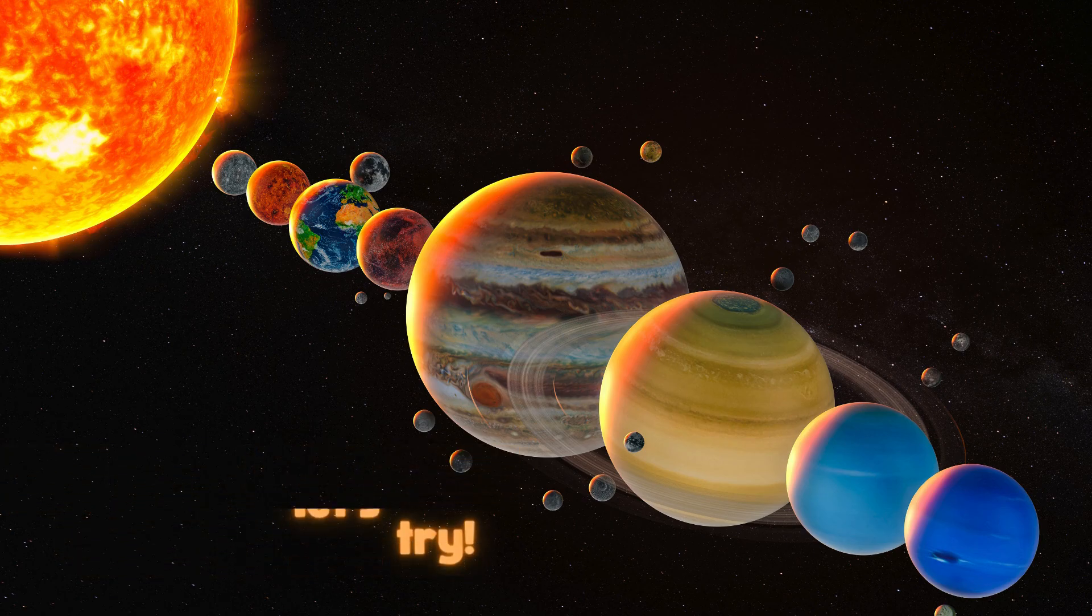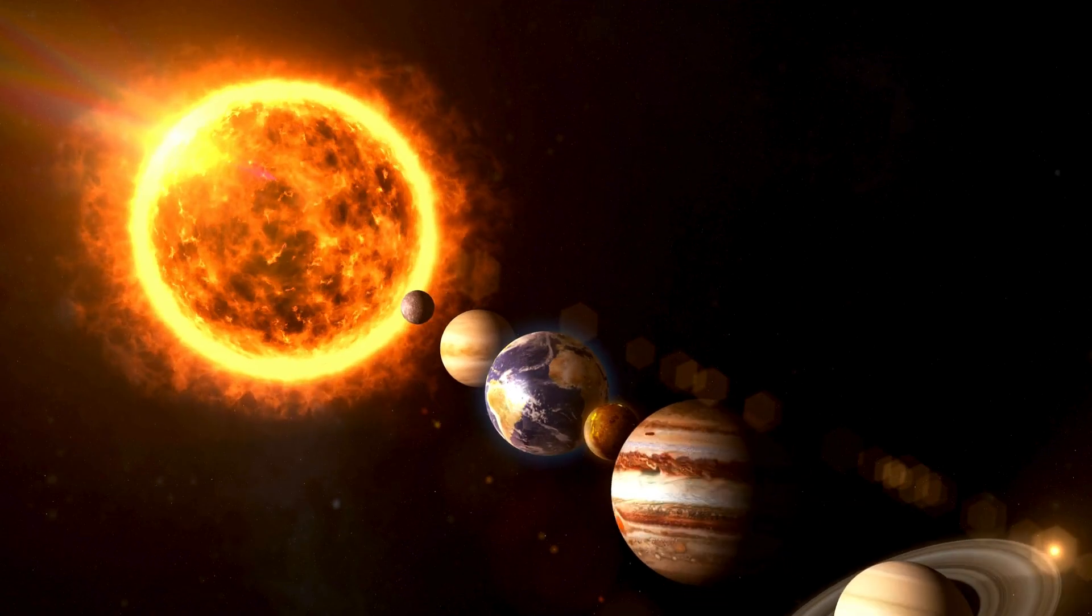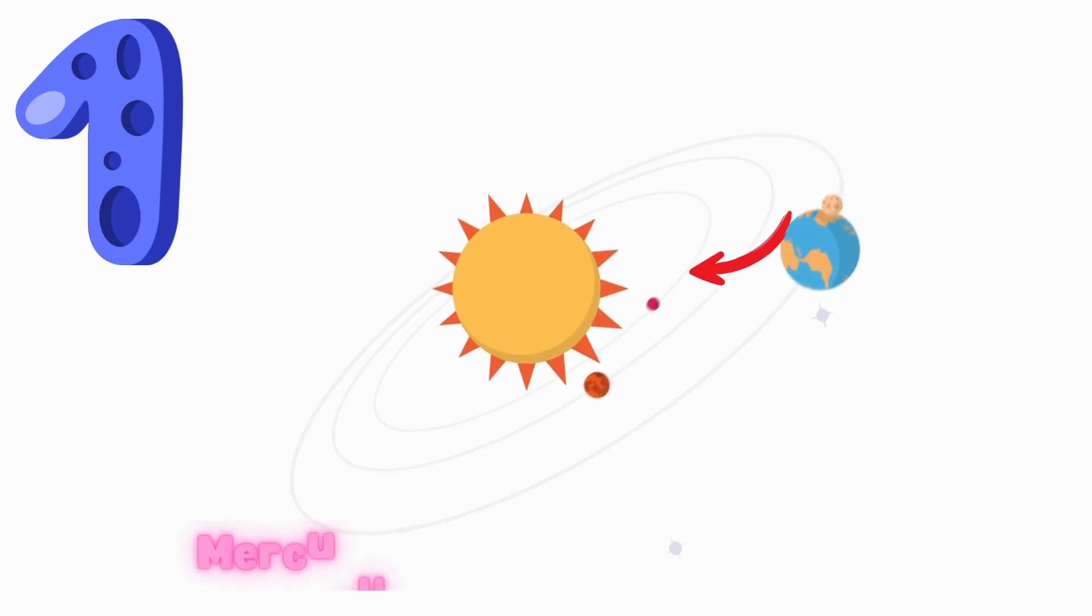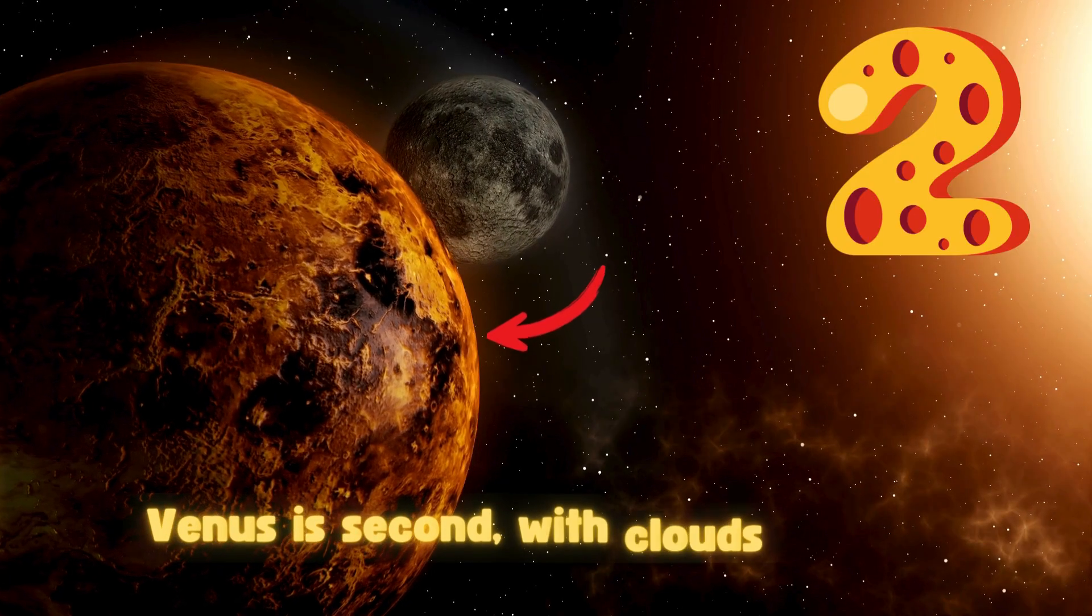Come on, let's try. The sun is bright, it gives us light. It keeps us warm both day and night. Mercury's first and moves so fast. Venus is second with clouds so vast.